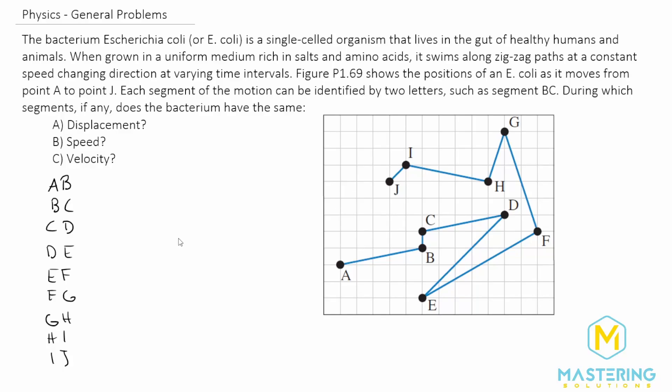Welcome to Mastering Solutions. In this problem they want us to look at this graph talking about the movement of the E. coli and they want us to figure out if there are any sections where it has the same displacement, the same speed, and the same velocity.